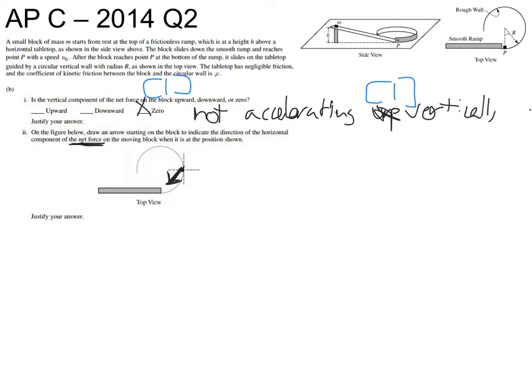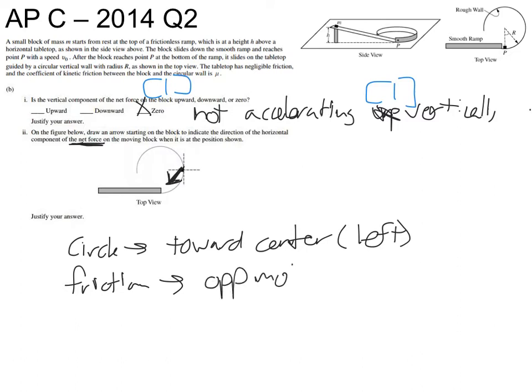And, again, you would make a comment saying that because it's going in a circle, that one of the components is towards the center, to the left. And, because there's friction, it's kind of going opposite motion. So, basically, back. I don't want to say down, only because down implies vertical motion. And, we kind of already said that down is nothing. So, this is more of, like, left and back, I guess, you could say. And that's pretty much your reasoning. Three points. Two full points for this, and one point for this explanation.